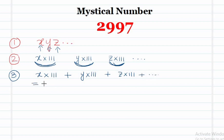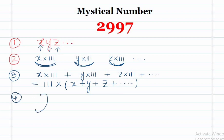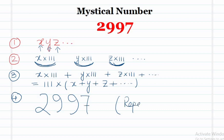That means it is the same as 111 multiplied by the sum of the digits, that is X plus Y plus Z. If we repeat this procedure, ultimately we will get 2997. It may take one step, two steps, or more steps depending on the number.